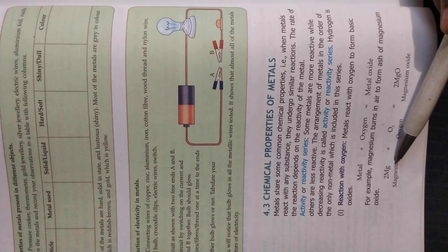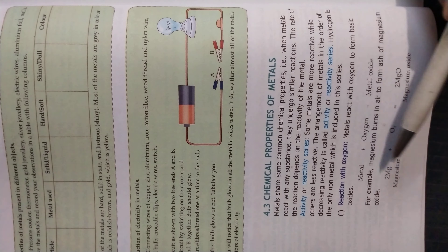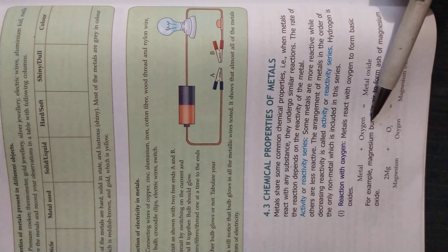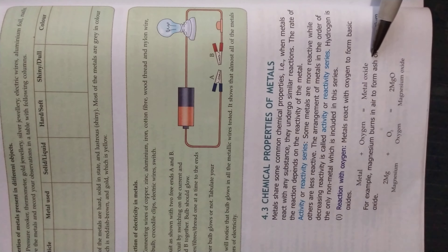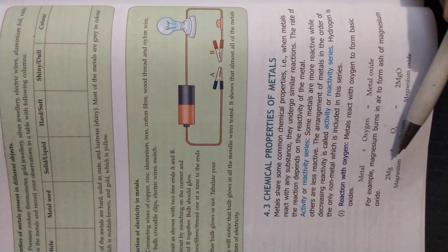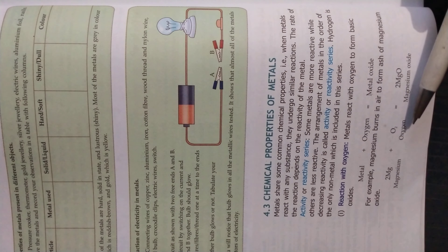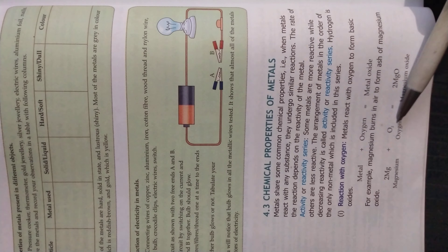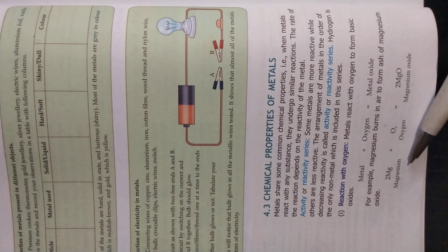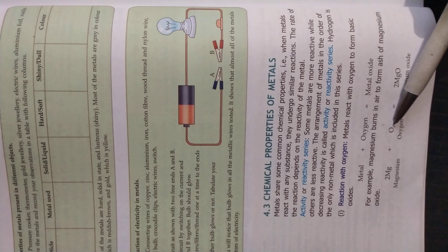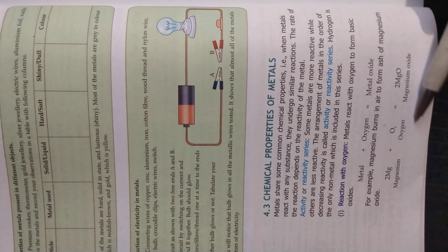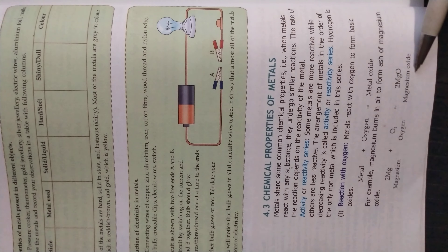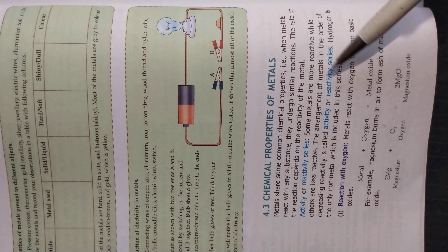We must remember that metals react with oxygen to form metal oxides. For example, magnesium reacts with oxygen when it is burnt — in the presence of oxygen it forms magnesium oxide, which appears as a white powder.